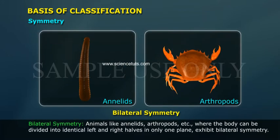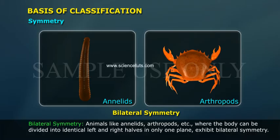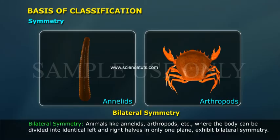In bilateral symmetry, animals like annelids, arthropods, etc., have a body that can be divided into identical left and right halves in only one plane.